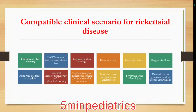What are the compatible clinical scenarios for rickettsial disease? One or more of the following may be present: undifferentiated fever for more than five days, sepsis of unclear etiology, fever with rash, fever with edema, dengue-like illness, fever with headache and myalgia, fever with hepatosplenomegaly or lymphadenopathy, aseptic meningitis, meningitis, or acute encephalitis syndrome.